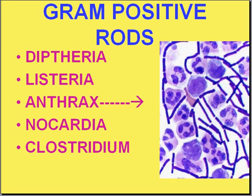Listeria is notable for several things. It is a foodborne infection with a very high fatality rate, perhaps around 25%. It's also a cause of meningitis in newborns by virtue of its remarkable propensity to infect the placenta, and many newborn infections acquired through the placenta are from listeria.